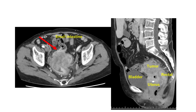A contrast-enhanced CT scan revealed rectal wall thickening lesions and invasion into the small intestine and ovaries with no metastasis. Therefore, the decision for laparoscopic lower anterior resection with en-bloc resection of the small intestine and ovaries was made for the treatment of locally advanced rectal cancer.